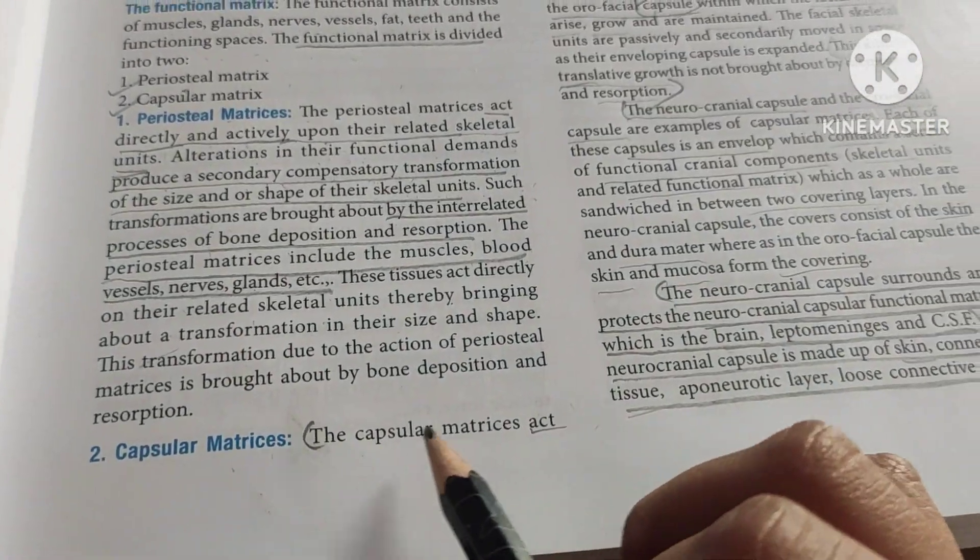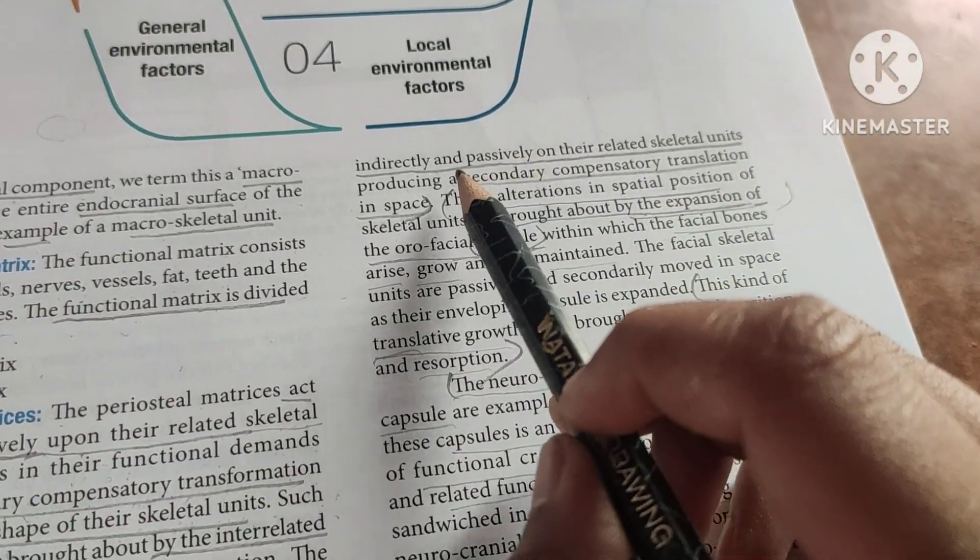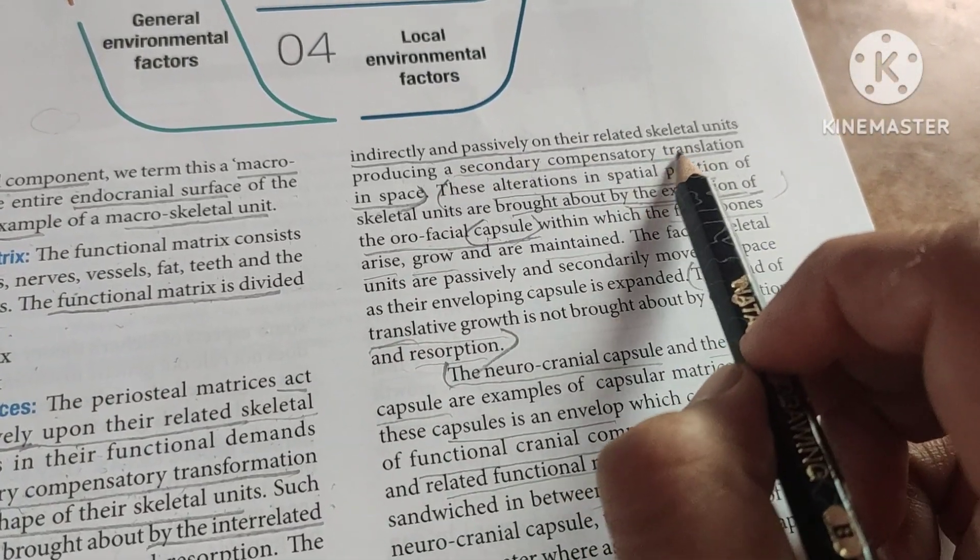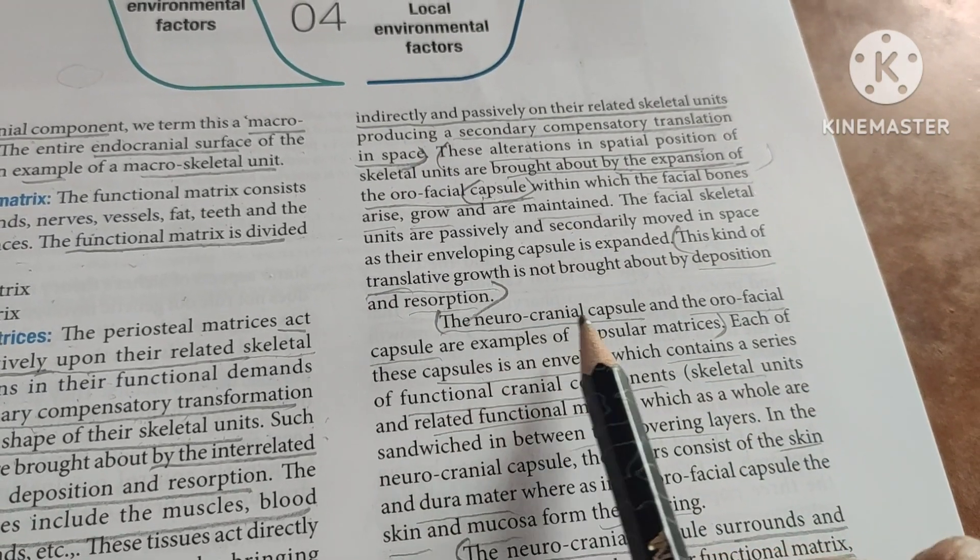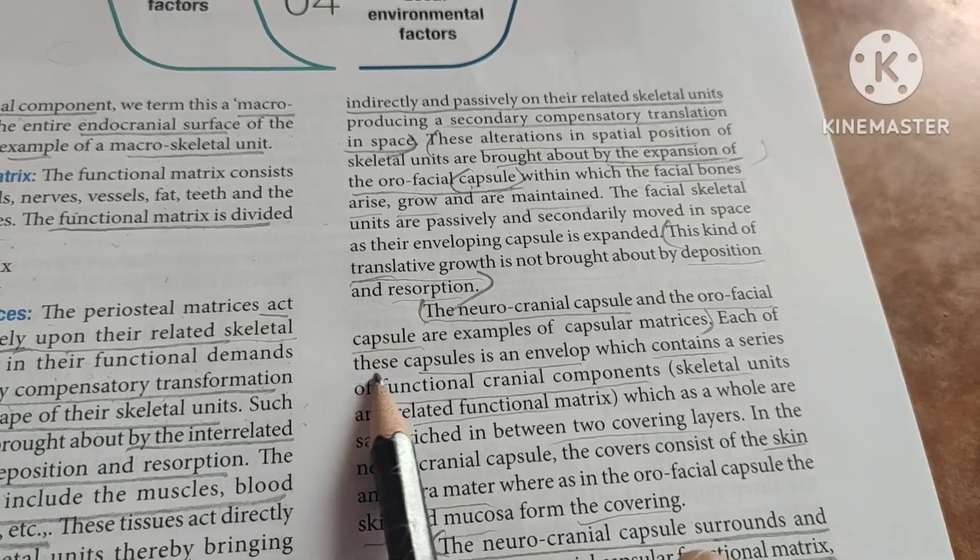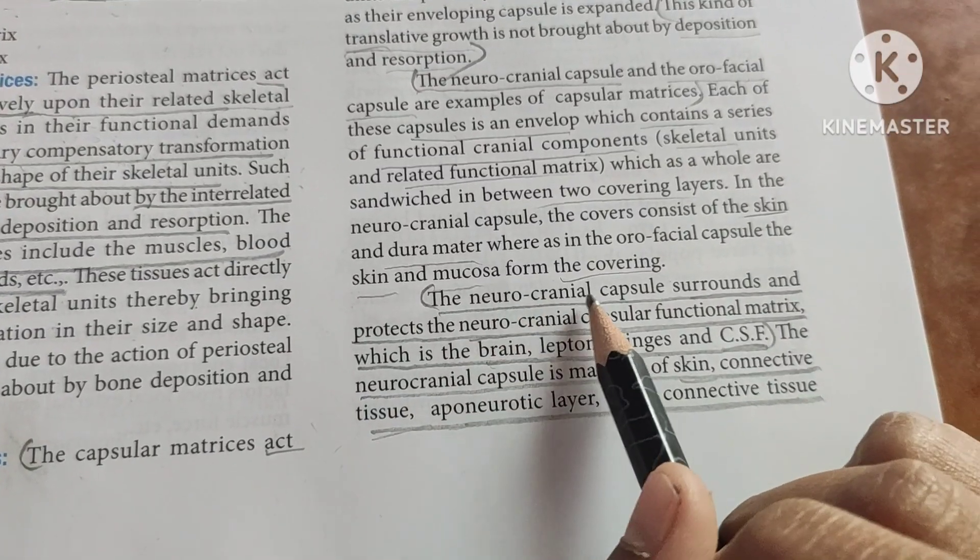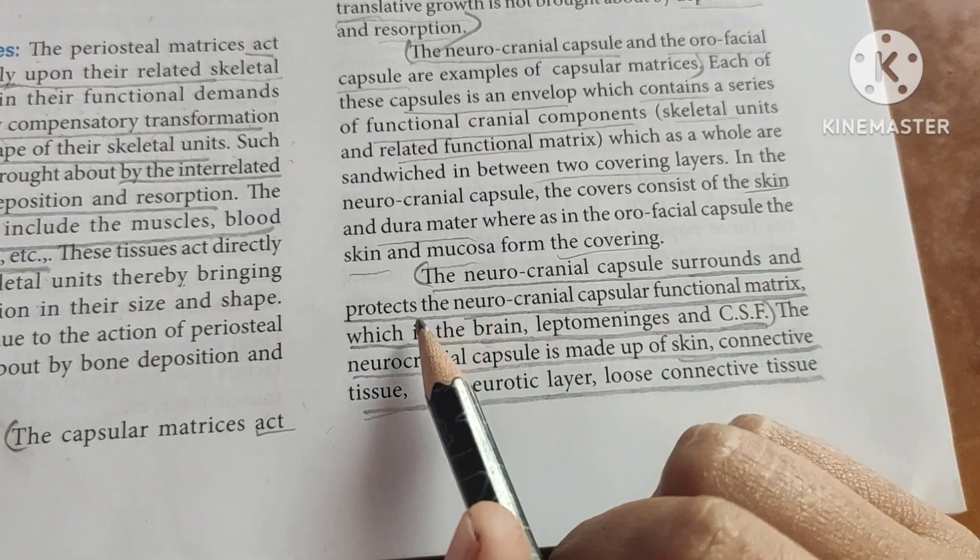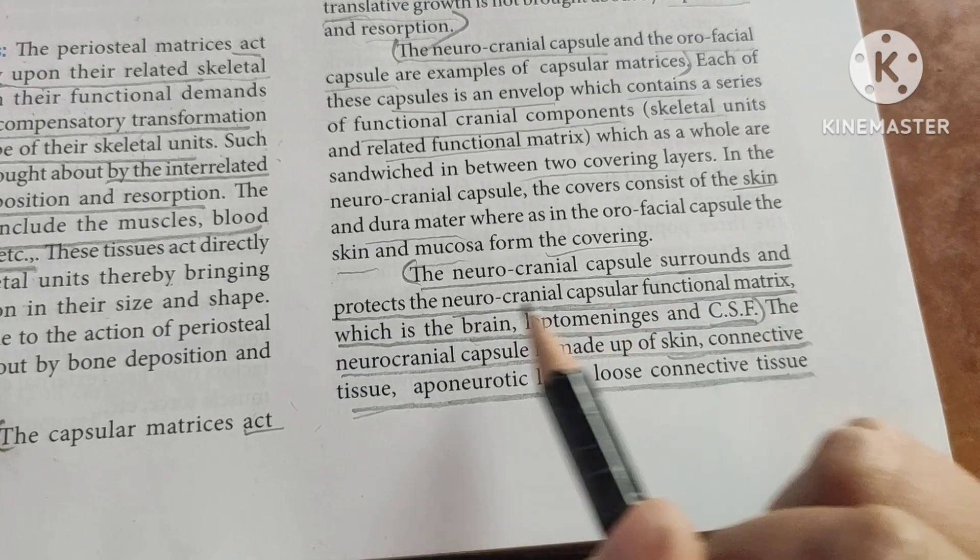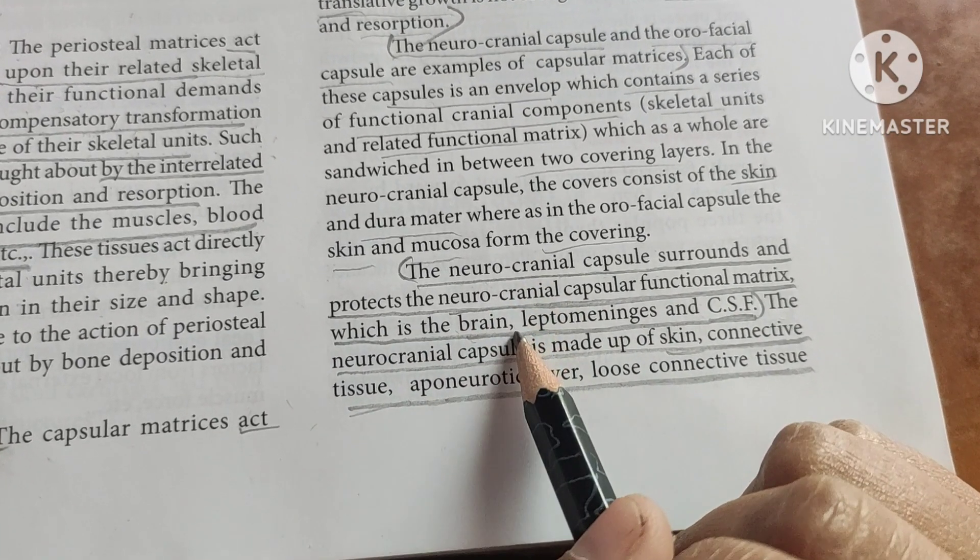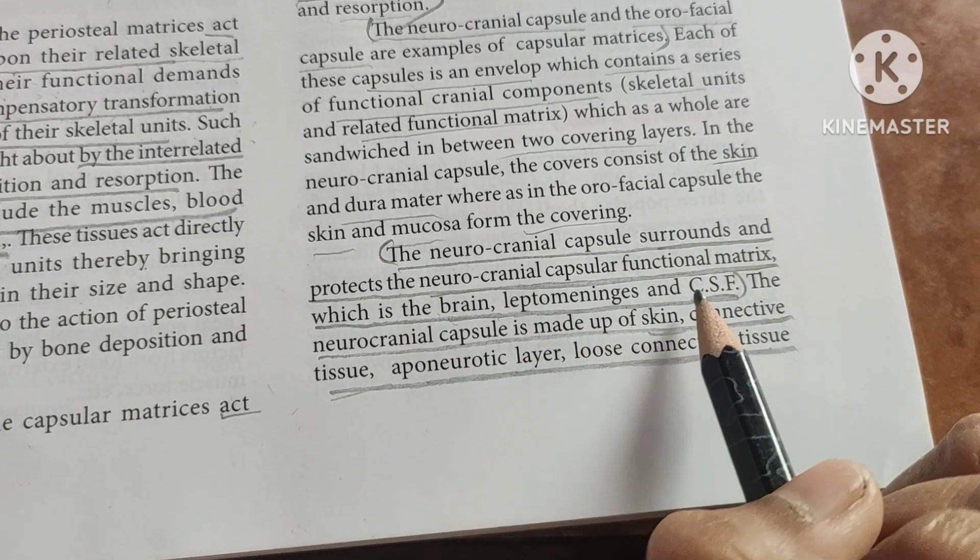The neurocranial capsule surrounds and protects the neurocranial capsular functional matrix, which is simply the brain, leptomeninges, and the CSF.